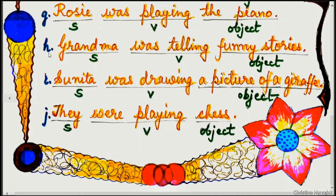Example H: Grandma was telling funny stories. 'Grandma' is the subject, 'was telling' is the verb with additional -ing, and 'funny stories' is the object.